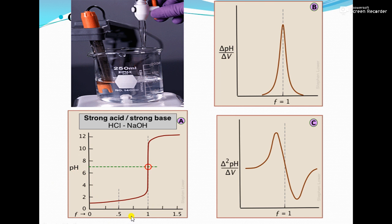From the primary pH vs. ml of NaOH graph, a second graph of ΔpH/ΔV versus ml of NaOH can be plotted, giving a peak that corresponds to the end point of the titration. A third graph of Δ²pH/ΔV² versus mean V is also plotted. These three graphs together define the pH metric titration of strong acid versus strong base. Thank you.